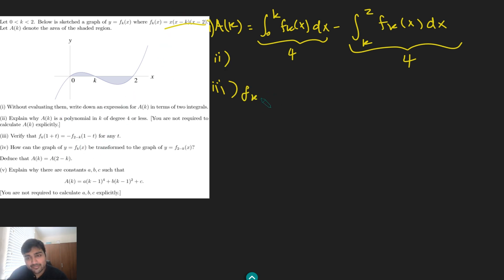So if I do fk(1+t), just according to this definition up here, it's (1+t)(1+t-k) and then (1+t-2). And if I simplify that as (t+1)(t+1-k) and then (t-1), like so.